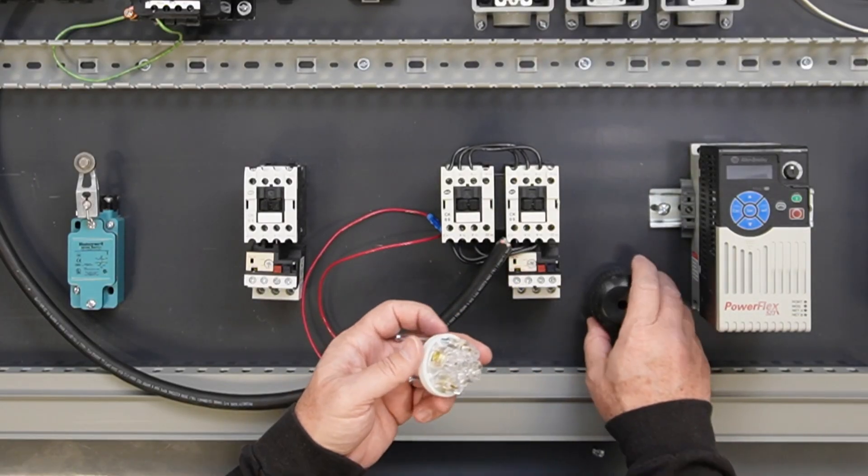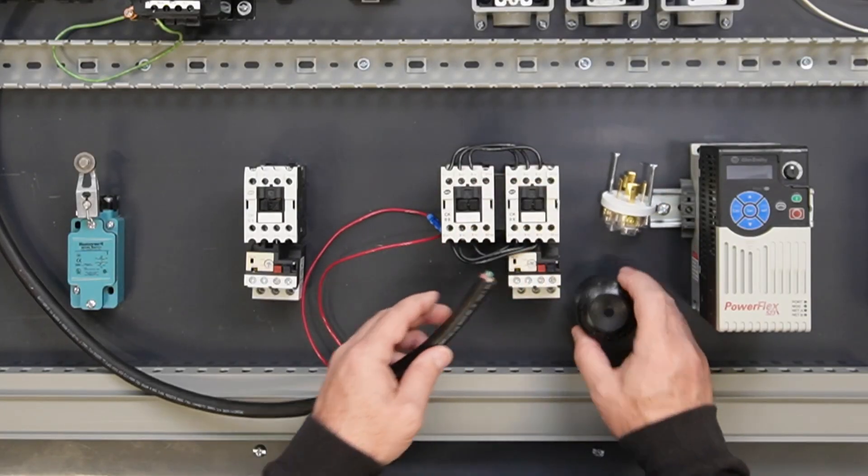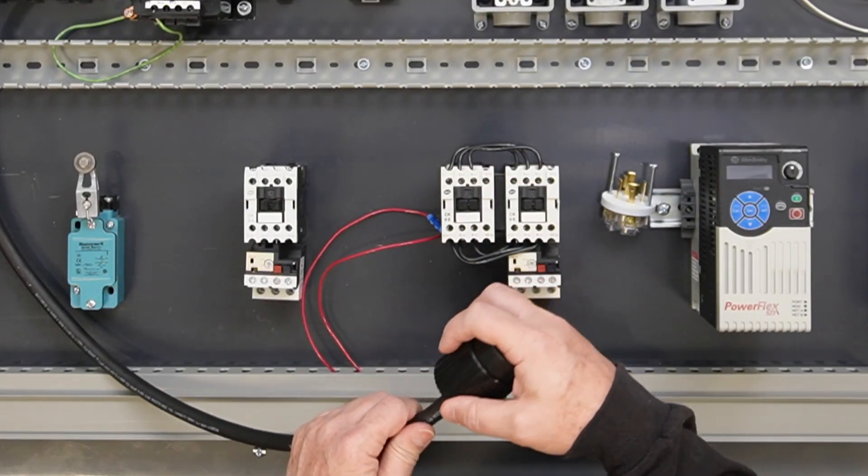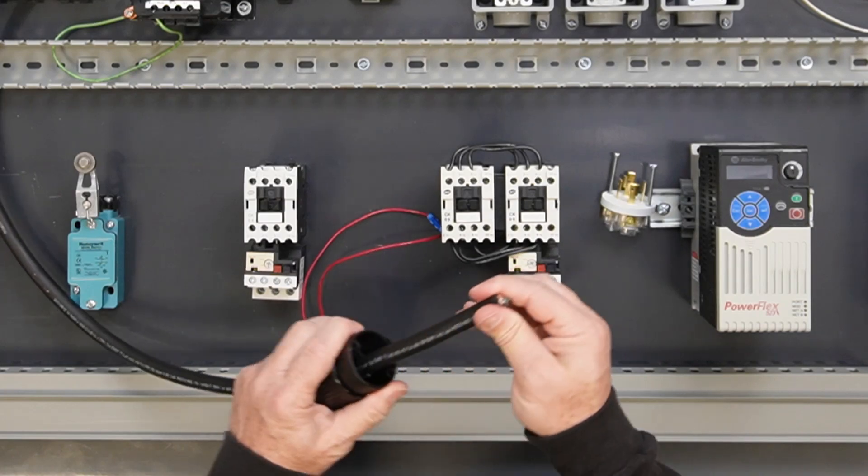Begin by disassembling the plug and separating the cover. Slide the cover over the cord, using care not to push out the dust shield when installing.